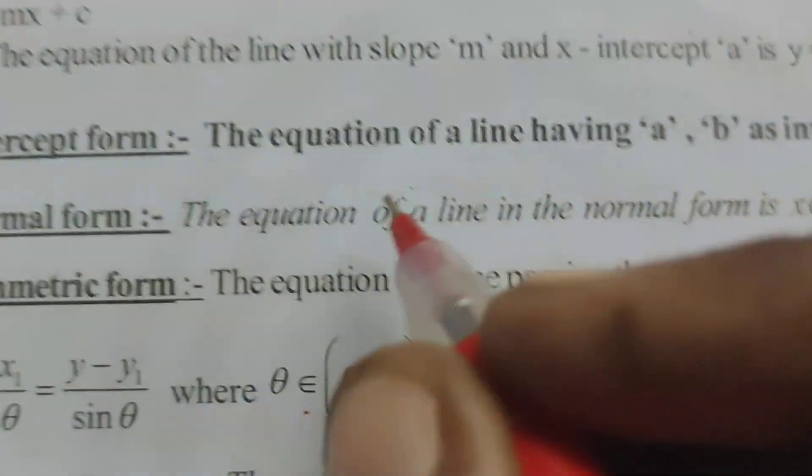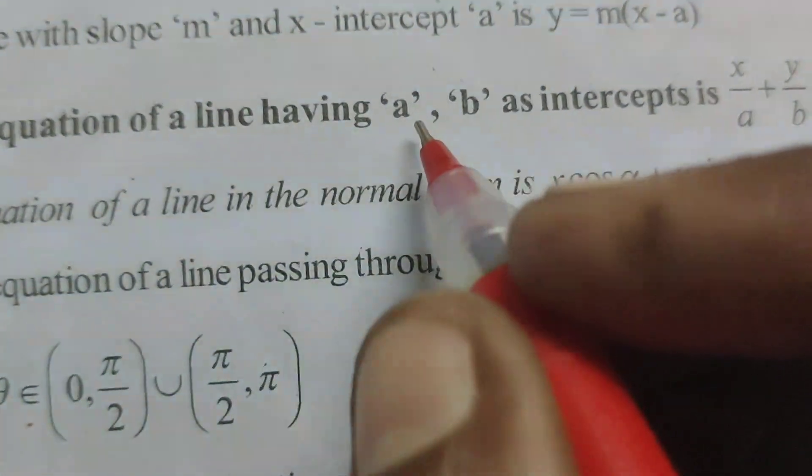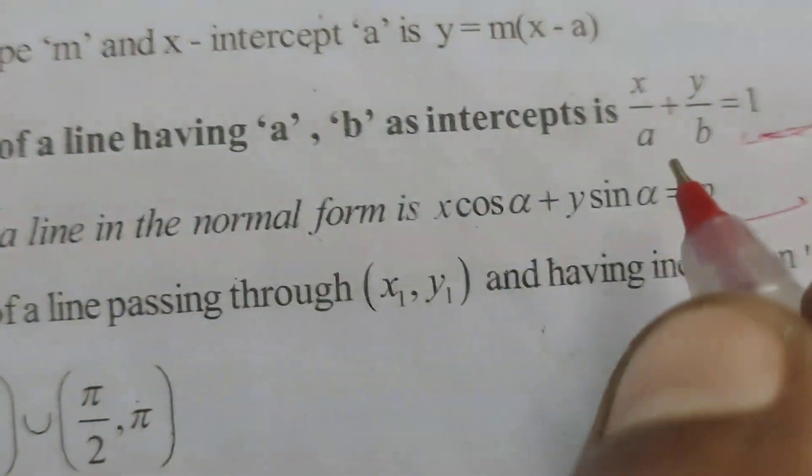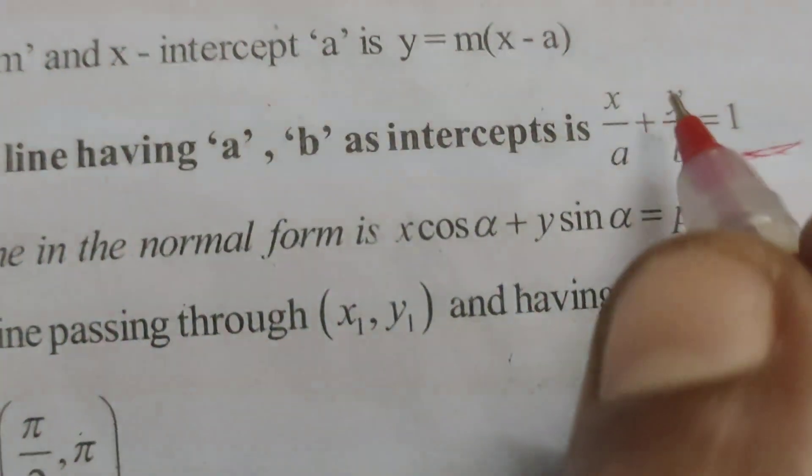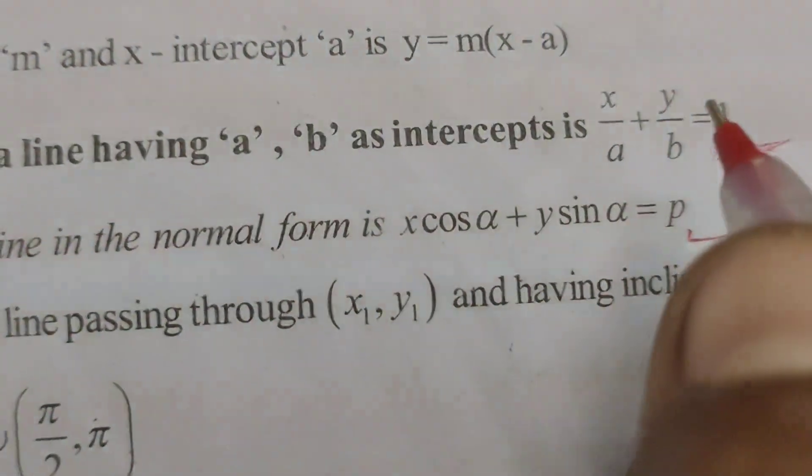What is the intercept form? The equation of a line having A, B as intercept form is X by A plus Y by B equals to 1.